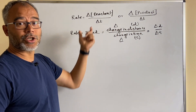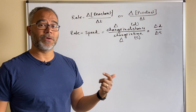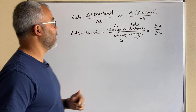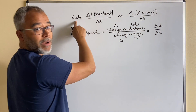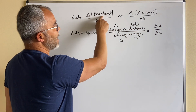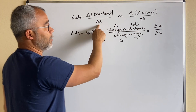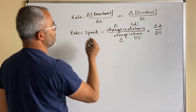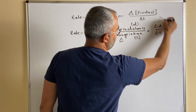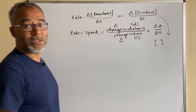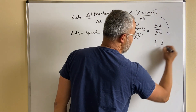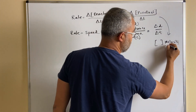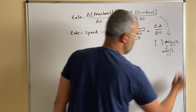We can apply that same logic to the rate of the reaction, but here we're not measuring distance — we're measuring how much of the reactant is depleting over time, or how much of the product is increasing over time. So the rate of the reaction equals the change in reactant concentration over change in time, or the change in product concentration over change in time. The square brackets denote that concentration is expressed in molarity — moles per liter.